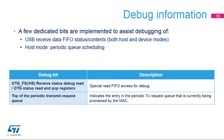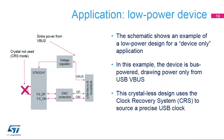Within the USB module, certain dedicated bits are implemented to allow debug functionality in a USB application. They relate to FIFO status and contents and the scheduling of periodic queues in host mode. Additional details of these debug bits are listed in this table.